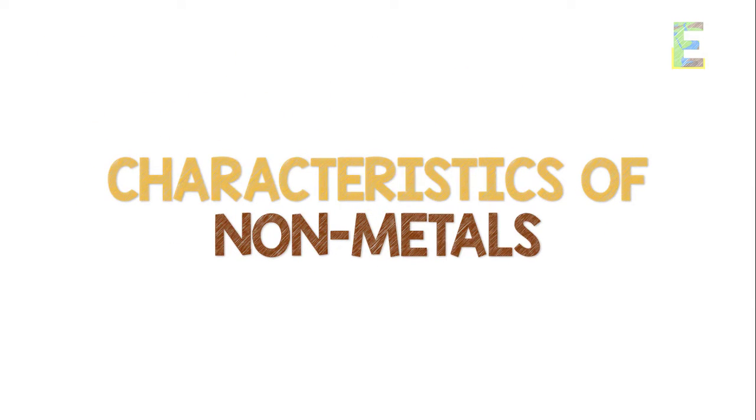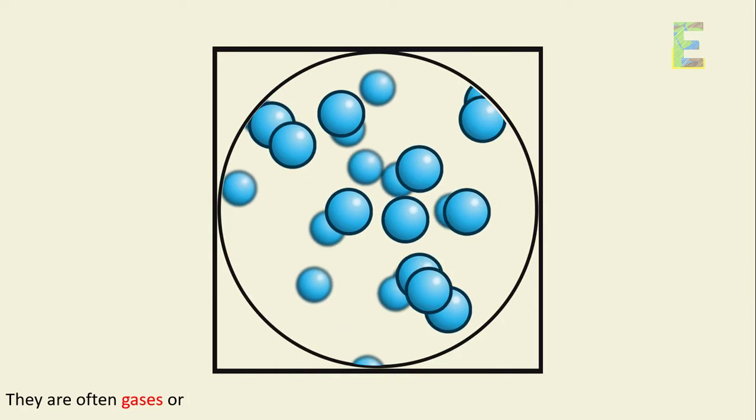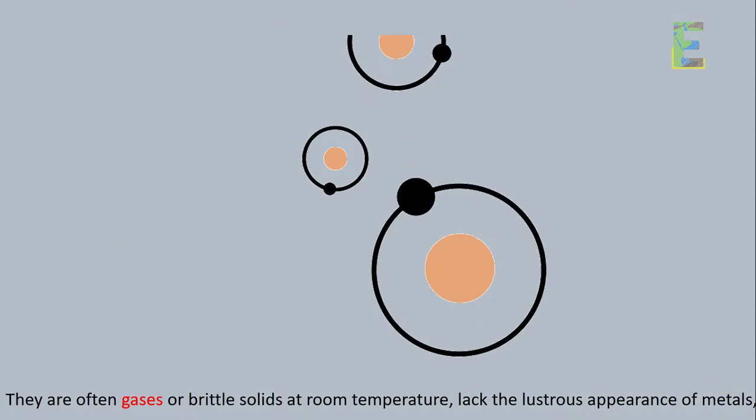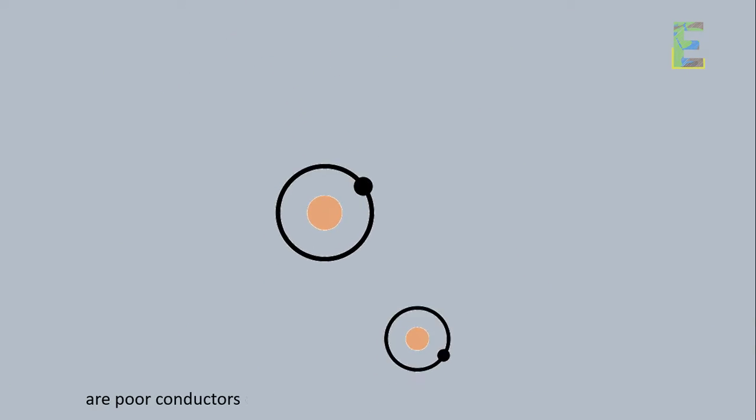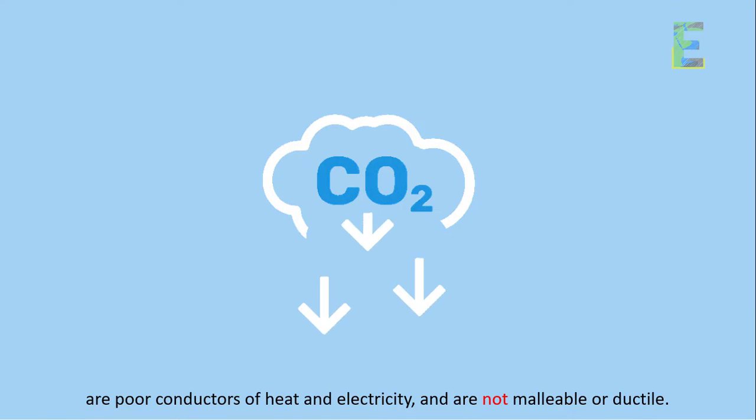Characteristics of non-metals. In contrast, non-metals have quite different properties. They are often gases or brittle solids at room temperature, lack the lustrous appearance of metals, are poor conductors of heat and electricity, and are not malleable or ductile.